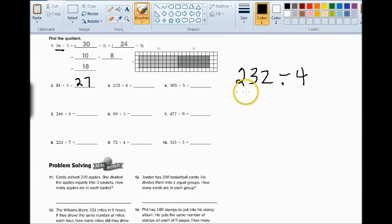We're going to find a multiple of 4 that is close to 232, but does not go over. That's very important. We can't go above 232. Now remember our strategy. We're going to underline 23, and just look at those two numbers.